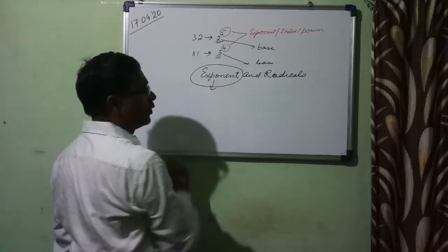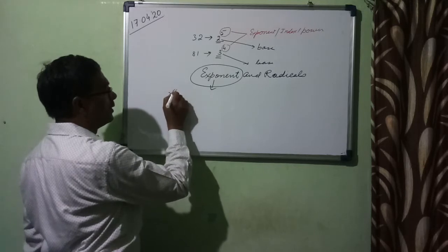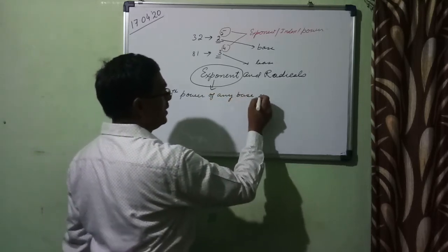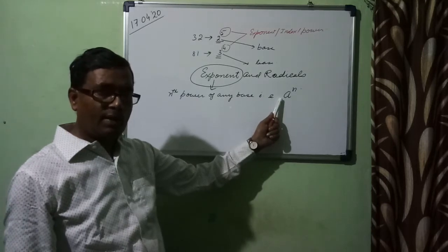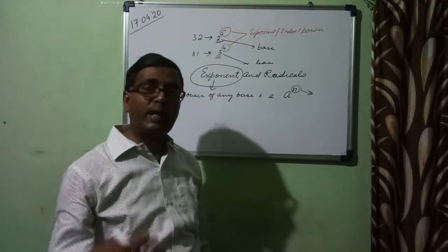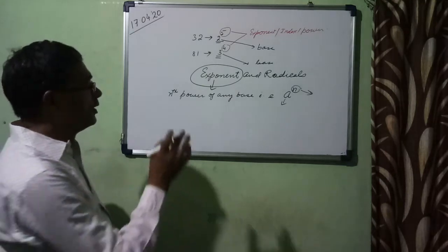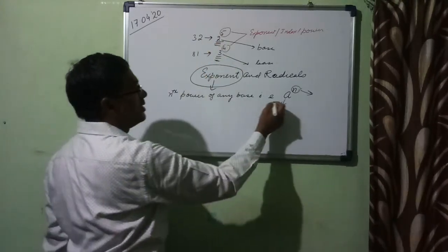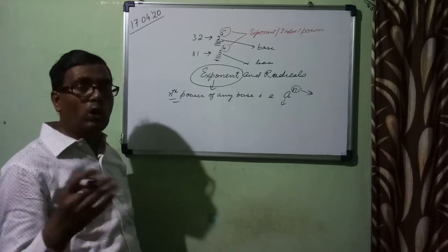So what is called an exponent? The nth power of any base — that is, a to the power n — is called the nth power of a. This n can be any number, any integer; it may be negative, it may be positive, or it may even be a fraction. And a is any real number. So these are the numbers we call exponential form. Therefore, here we will discuss the properties — the laws of exponent.